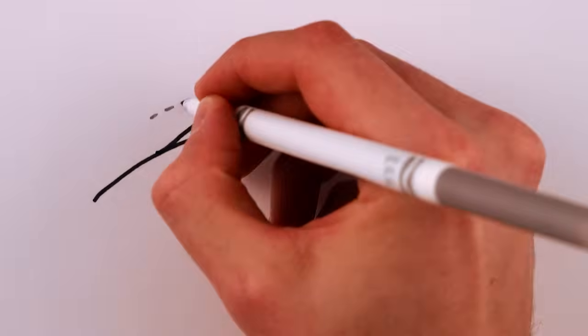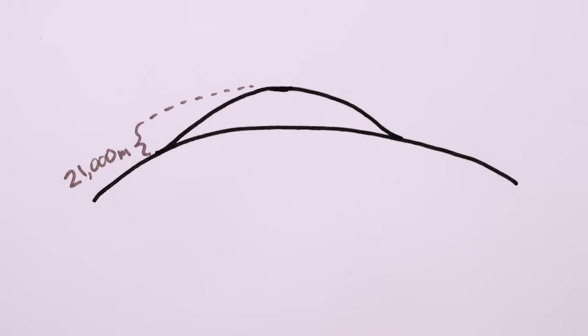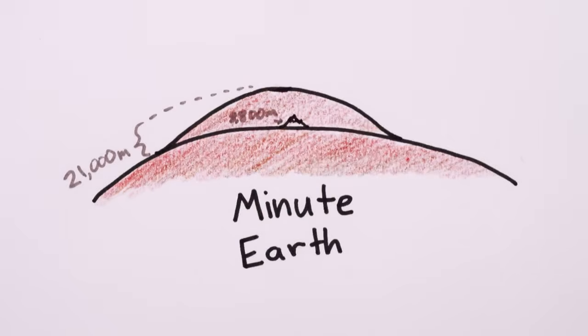Olympus Mons, the tallest mountain in our solar system, towers 21,000 meters above the surface of Mars, nearly two and a half times the height of Mount Everest.